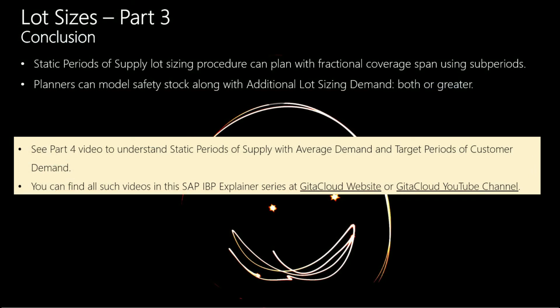In conclusion, static periods of supply lot sizing procedure supports fractional values in coverage span with the help of the subperiods functionality. It is a superior planning method to provide forward cover compared to safety stock, as it responds dynamically to demands within the coverage span, avoiding too little or too much safety stock. Planners can combine additional lot size demands and safety stock demands — either taking both into account or whichever is greater. See the Part 4 video to understand static periods of supply with average demand and target periods of customer demand.